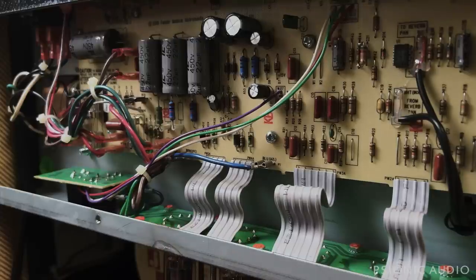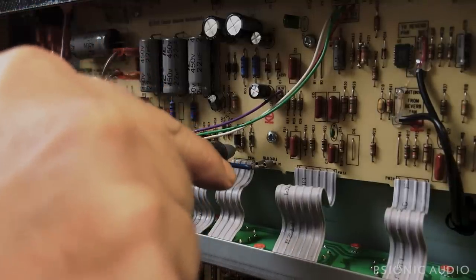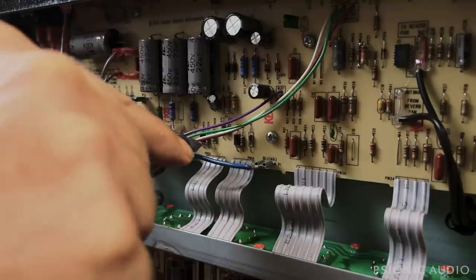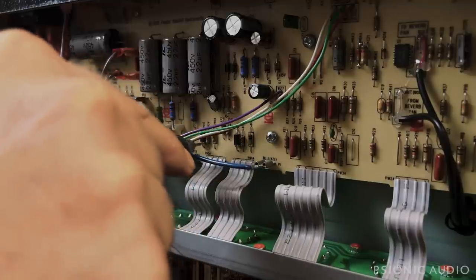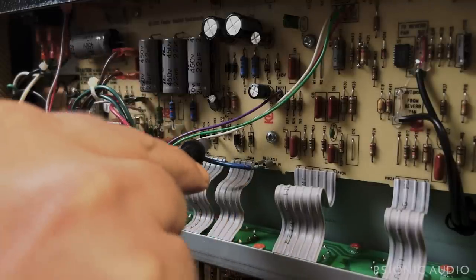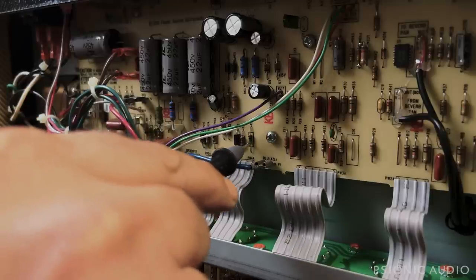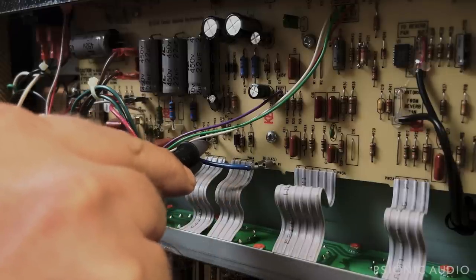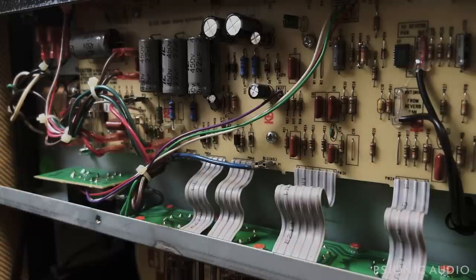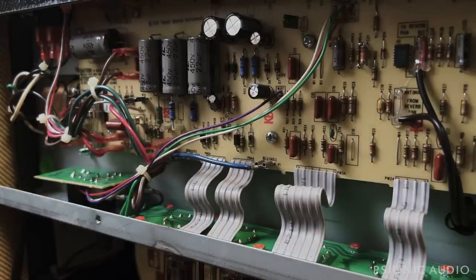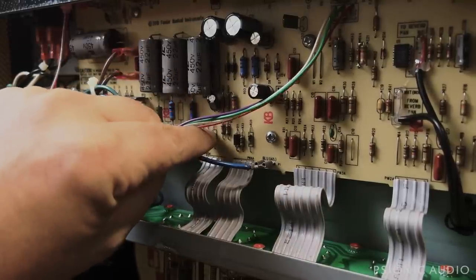I then measured the two grid stoppers here and here, those are 1.5K. I measured the diodes from the plate to ground on each output tube. Then I measured the two screen grid resistors, which are half-watt 100 ohms in the Blues Junior. And this one measures 100 ohms, and this one measures about 4 meg. So this resistor is pretty much completely failed open, which is not a surprise with a half-watt 100 ohm screen grid resistor.